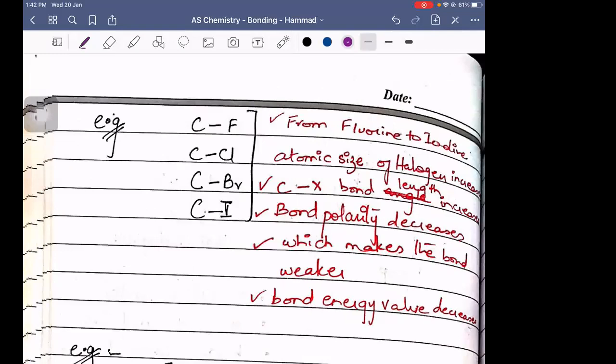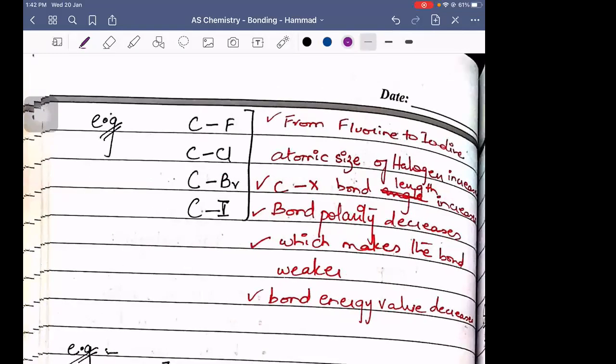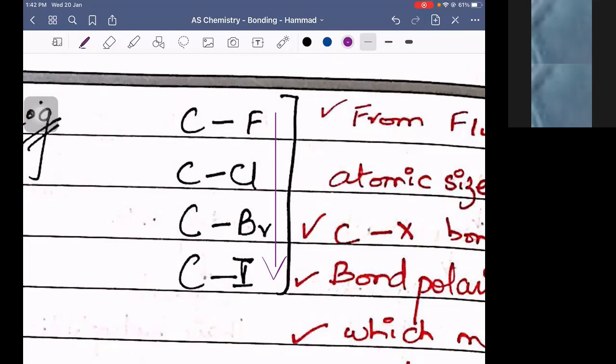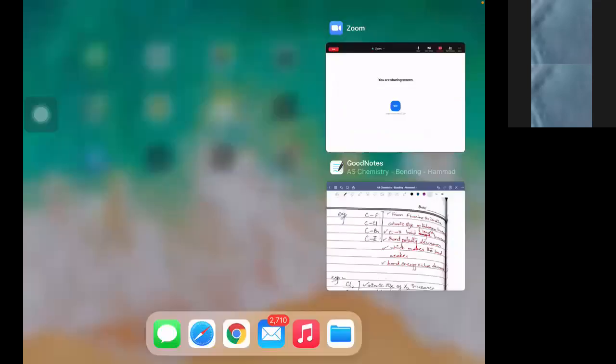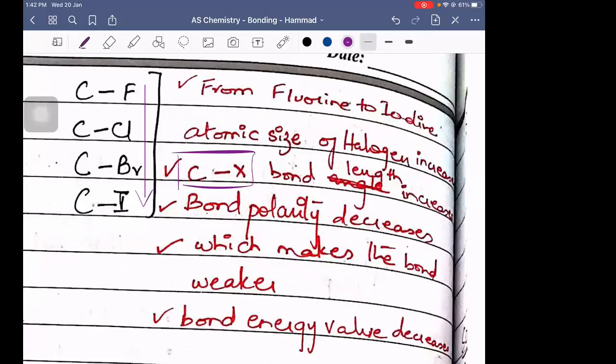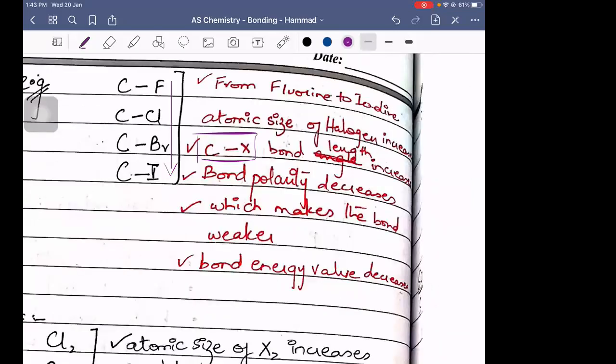Down the group, these are all halogens. By the way, down the group, atomic number increases, meaning number of electrons increases. Atomic radius also increases. From fluorine to iodine, the atomic size of the halogen will increase. C to X bond, meaning carbon to halogen bond, length increases. Bond becomes weaker, therefore bond energy value decreases.